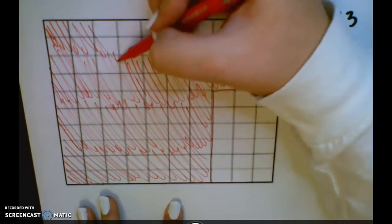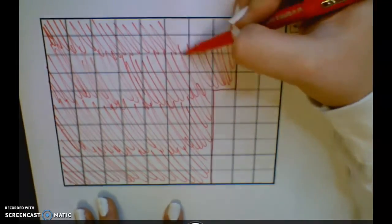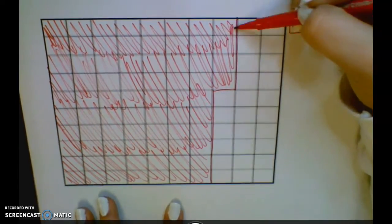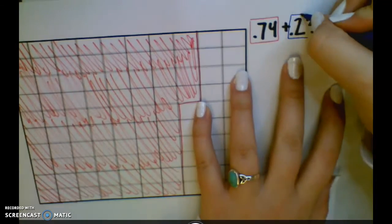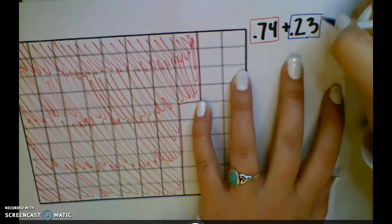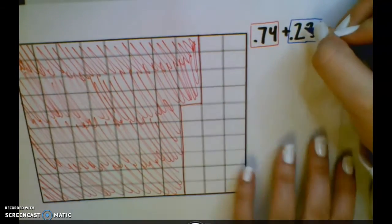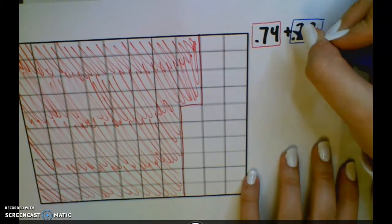Okay, so I've loosely shaded 74 hundredths. My second step is to add my second number in a different color, that way I can see what two addends we're going to put together.